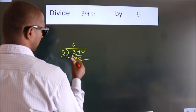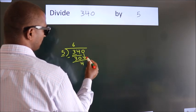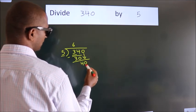Now we should subtract. We get 4. After this, bring down the next number, 0. So we have 40.